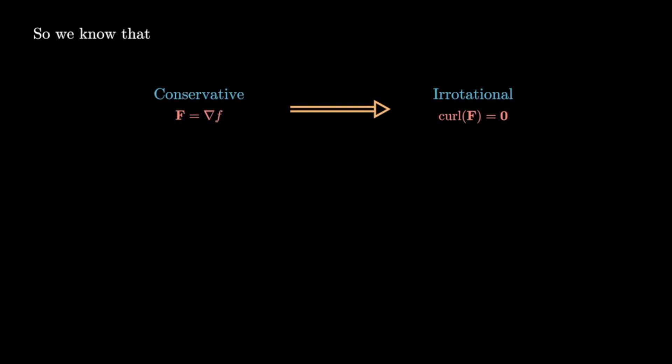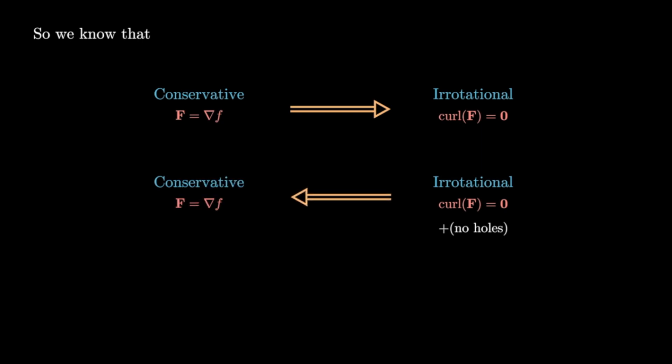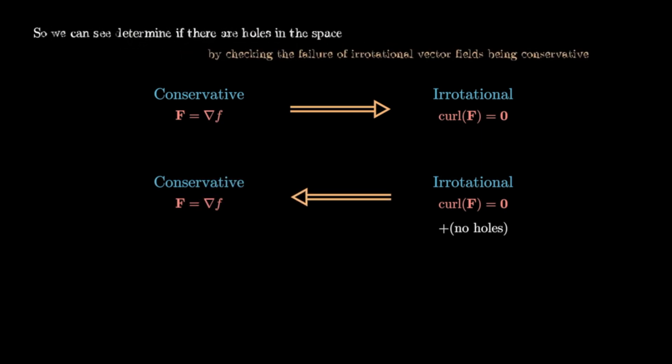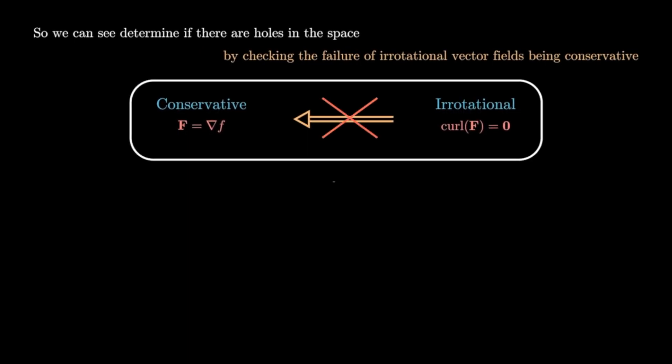We can determine if there are holes in a space by checking the failure of irrotational vector fields being conservative. We know that conservative vector fields are always irrotational: if f is the gradient of some potential, then its curl has to be zero. But if the curl equals zero, a vector field is not necessarily conservative. An irrotational vector field on a space with no holes is conservative, so if an irrotational vector field is not conservative, that tells us the space has holes in it. We can measure the geometry of a space by looking at the failure of irrotational vector fields to be conservative.